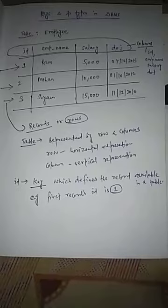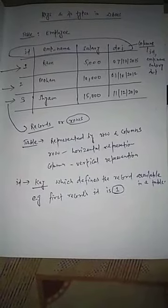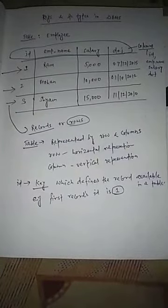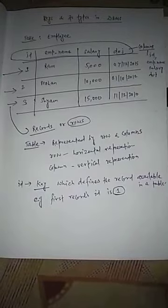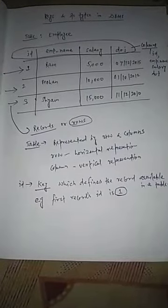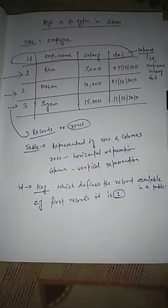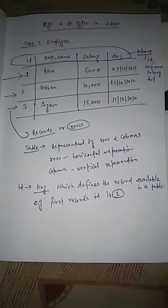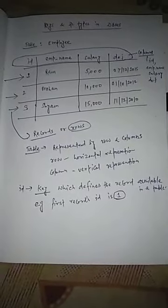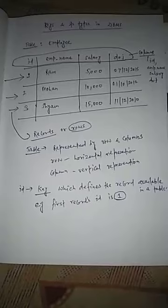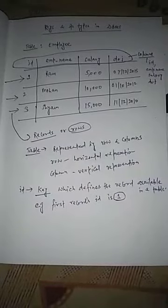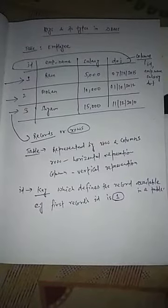For this, we take an example of one table named as imply, in which we have taken the fields, also known as columns, as id as primary key, imply name, salary, and date of joining.